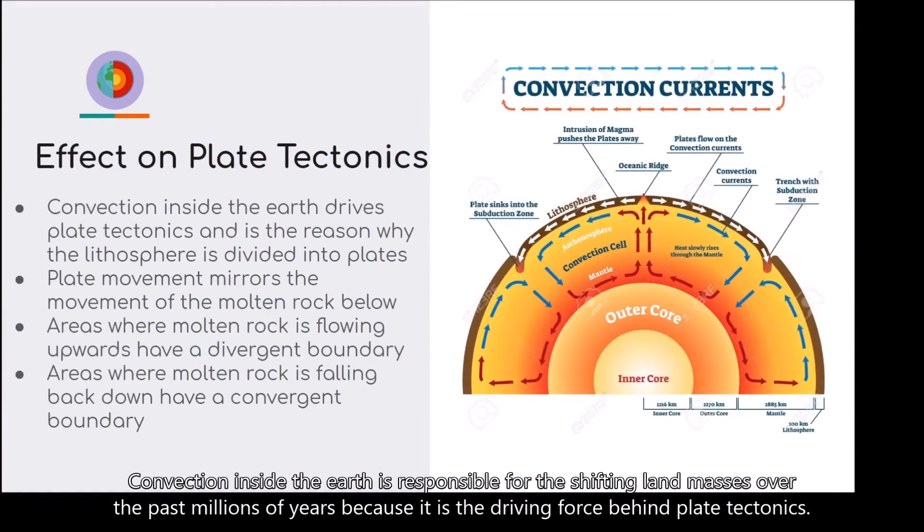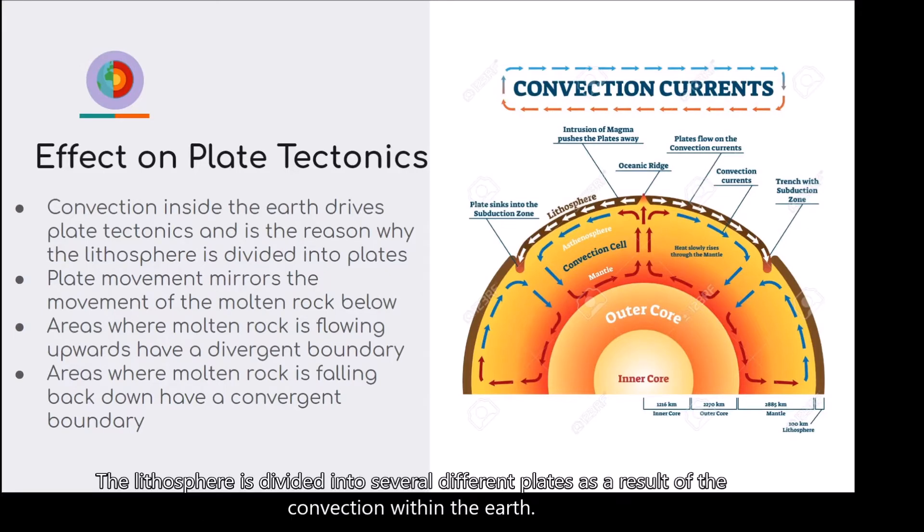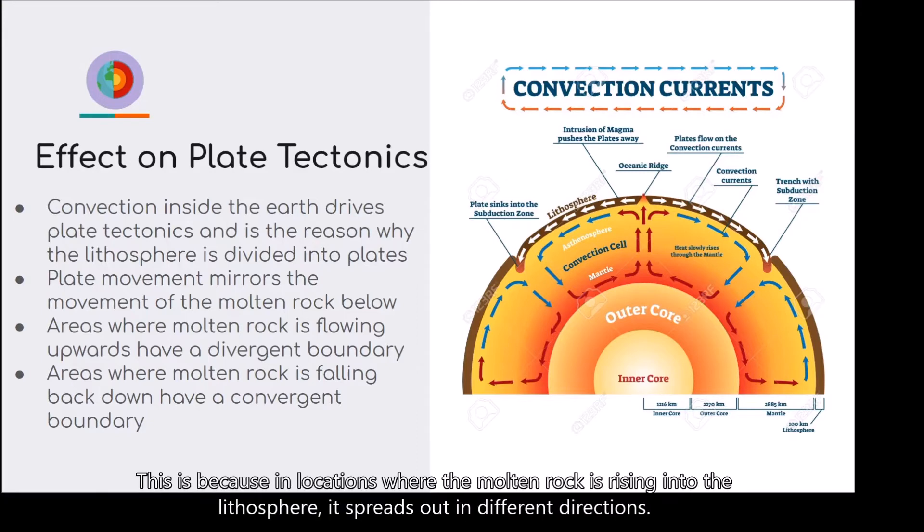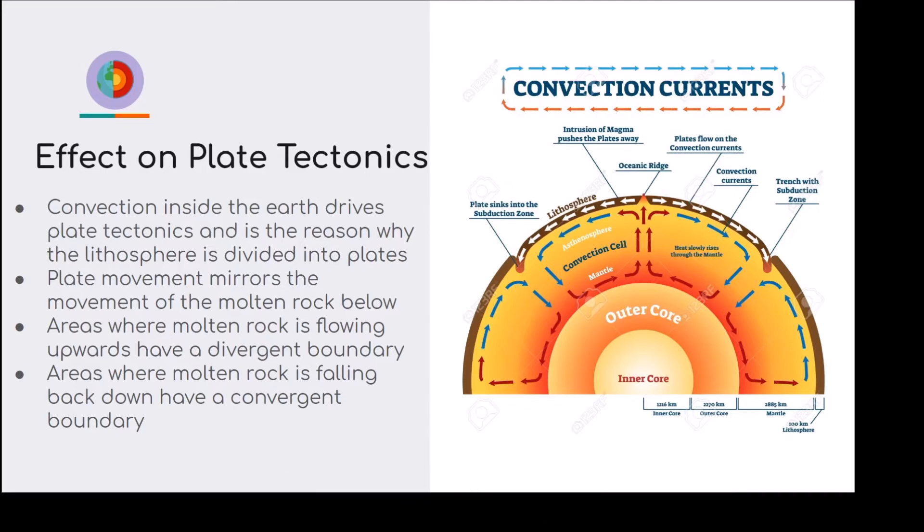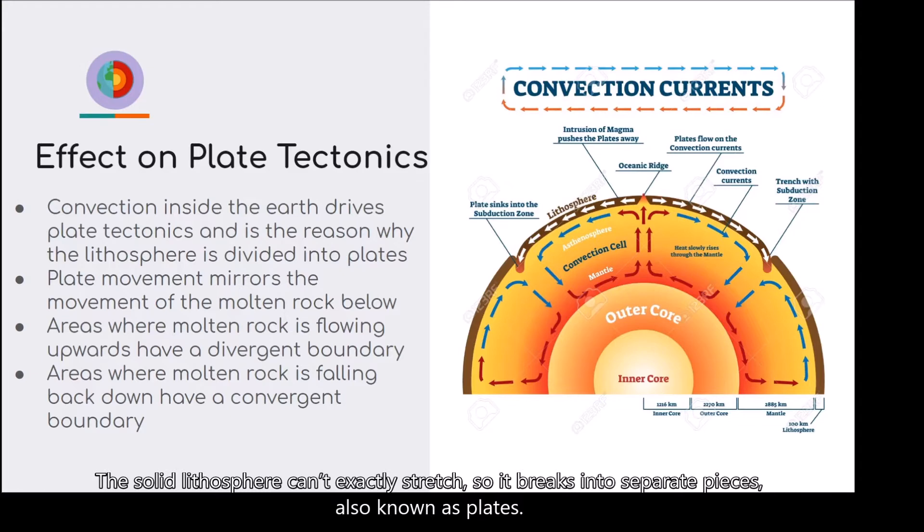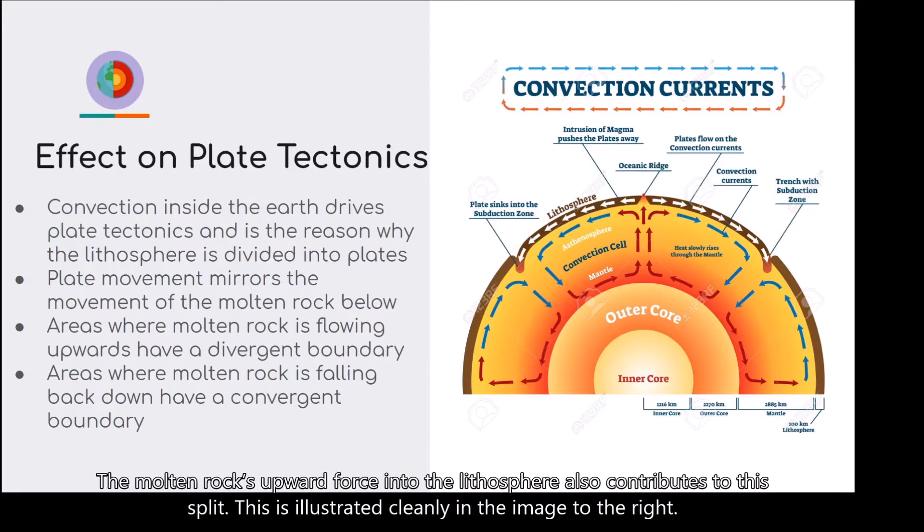Convection inside the Earth is responsible for the shifting landmasses over the past millions of years because it has driving force behind plate tectonics. The lithosphere is divided into several different plates as a result of this convection within the Earth. This is because in locations where molten rock is rising into the lithosphere, it spreads out in different directions. The solid lithosphere can't exactly stretch, so it breaks into separate pieces, also known as plates. The molten rock's upward force into the lithosphere also contributes to this split. This is illustrated cleanly in the image to the right.